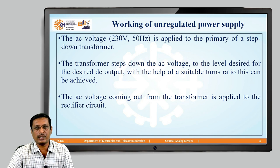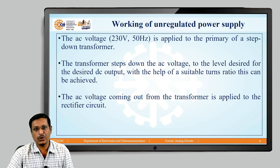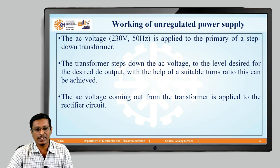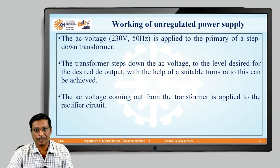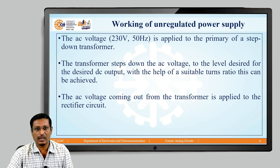Here is the brief working of an unregulated power supply. The input to the transformer is AC voltage, normally ranging from 230V at 50Hz, and is applied to the primary of a step-down transformer. The step-down transformer converts this higher voltage — 230V — to a desired lower voltage, for example 230V to 6V or 230V to 9V. By choosing the input and output voltages of a transformer, it is possible to decide the turns ratio.